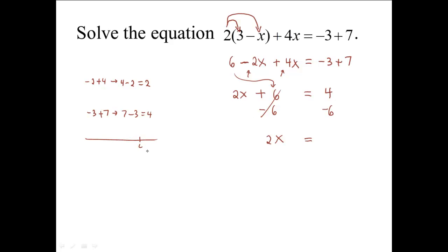And we have 4 minus 6. If we're at 4 on the number line, we subtract 6: 1, 2, 3, 4, 5, 6. We wind up at negative 2. 4 minus 6 is negative 2.